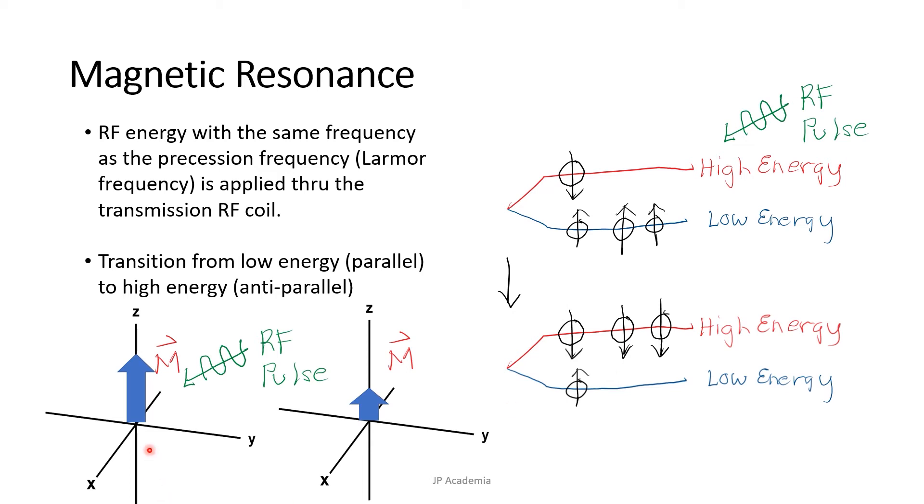In effect, the magnetization along the Z axis decreases as the protons pointing down now neutralizes the same number of protons pointing up.